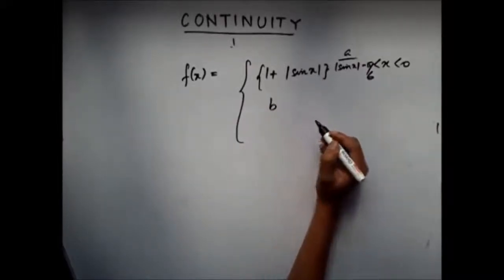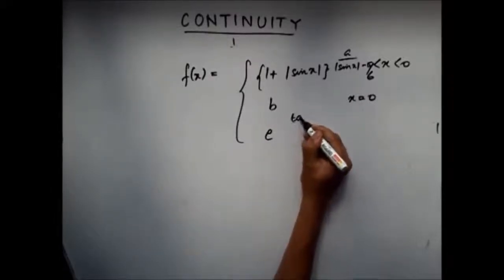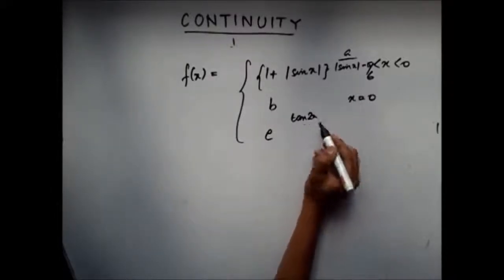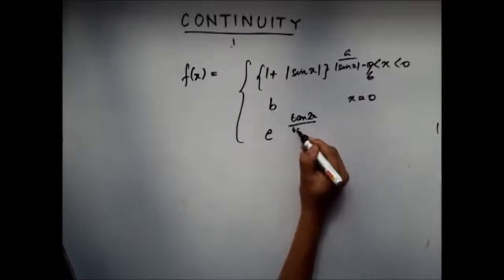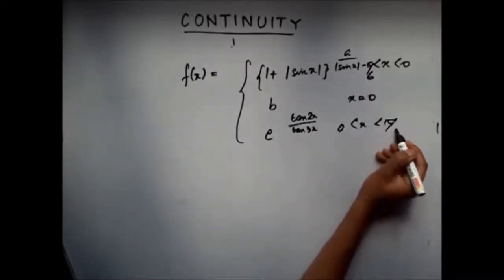This function is equal to b at x = 0, and e^(tan 2x / tan 3x) from 0 to π/6.